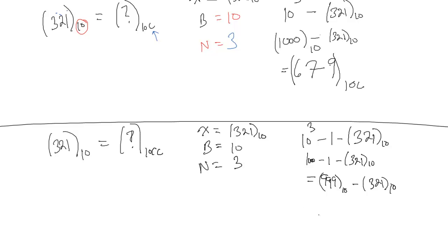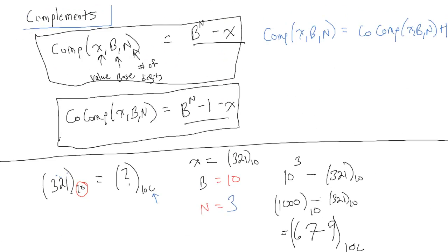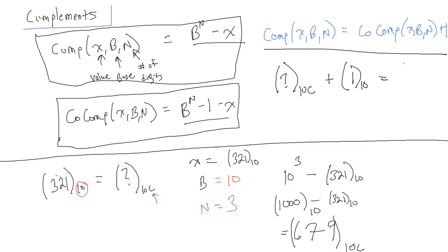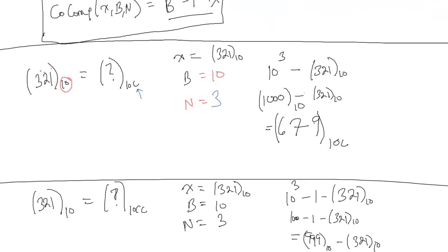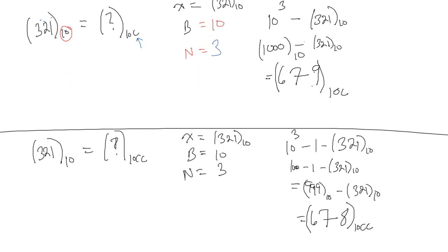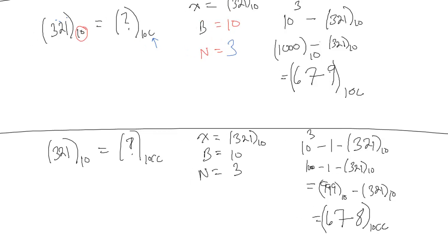This is interesting because we can do this easily in our head. 999 minus 321: you simply take each digit and subtract it from 9. So 9 minus 3 is 6, 9 minus 2 is 7, and 9 minus 1 is 8. So the 10's co-complement is 678. Notice: if you add 1 to the 10's co-complement, you get the 10's complement — and we'll come back to why that's important.